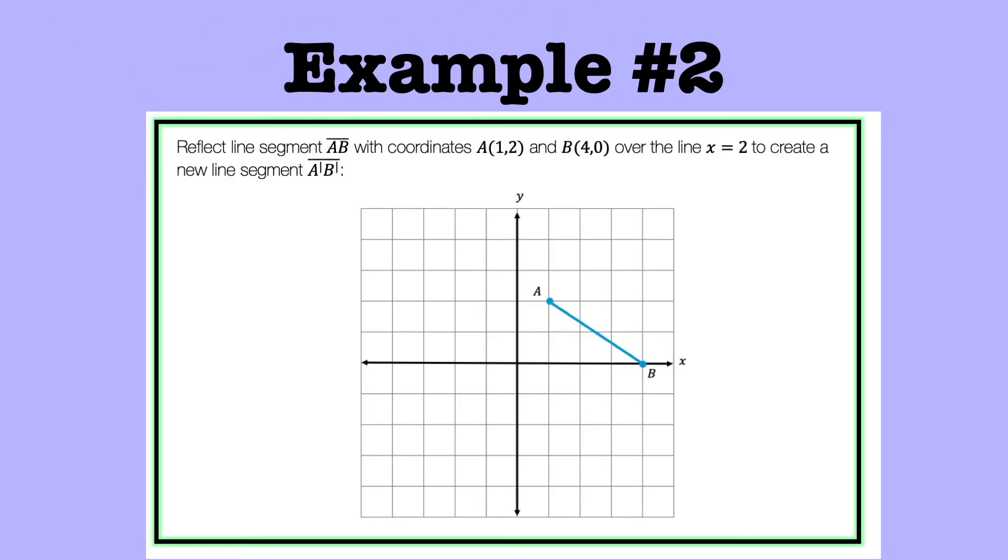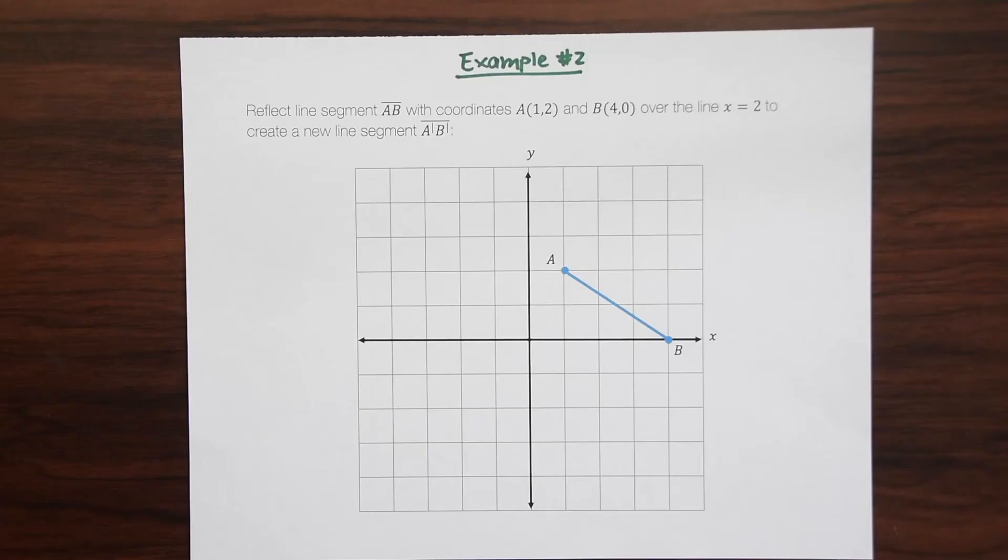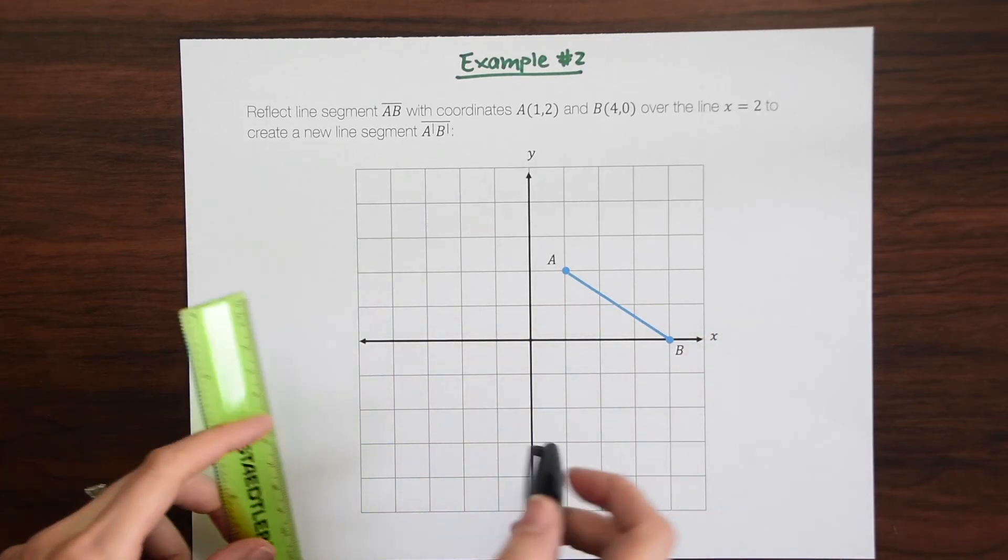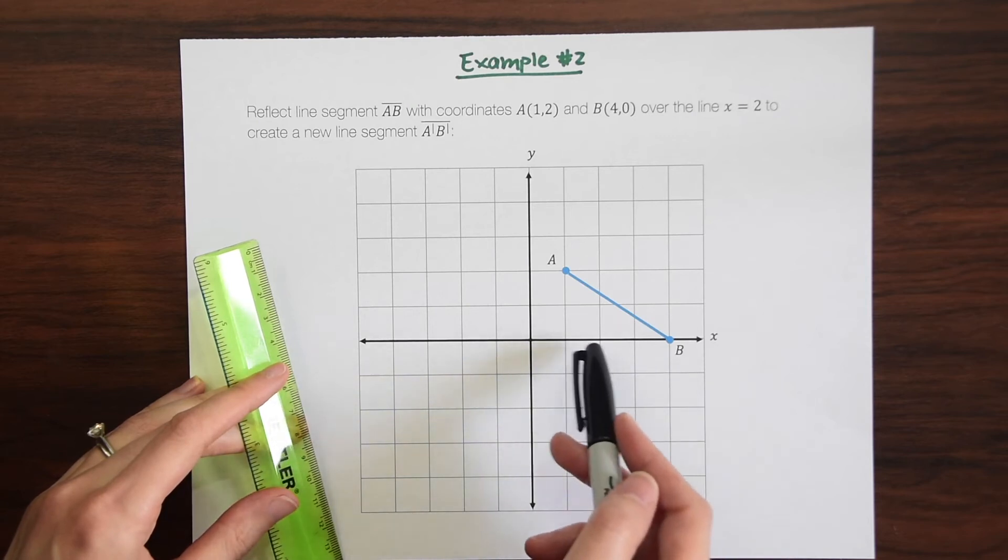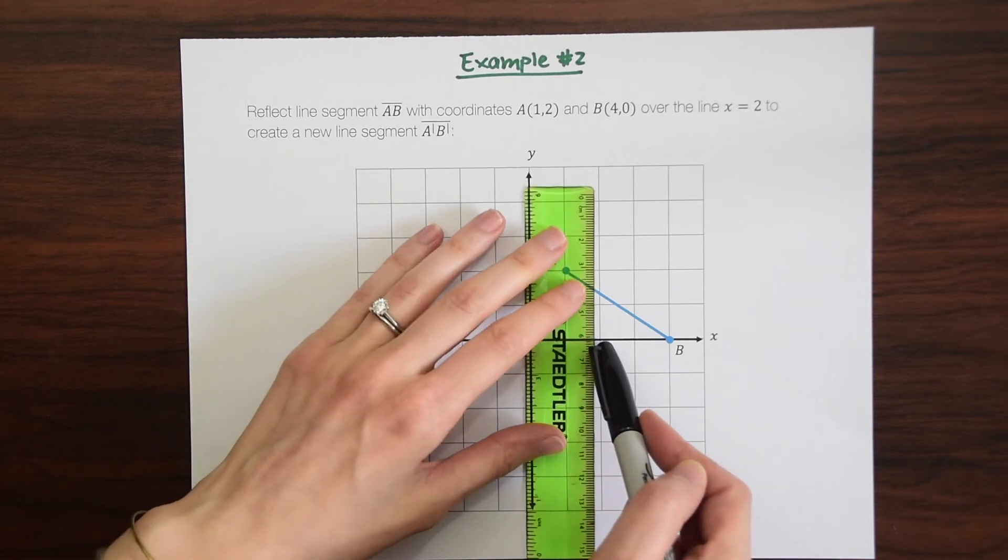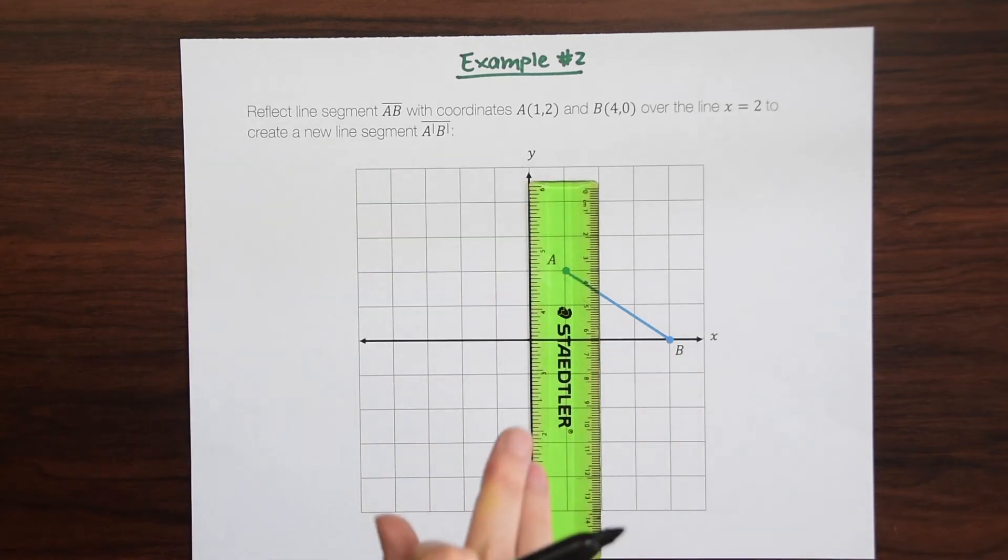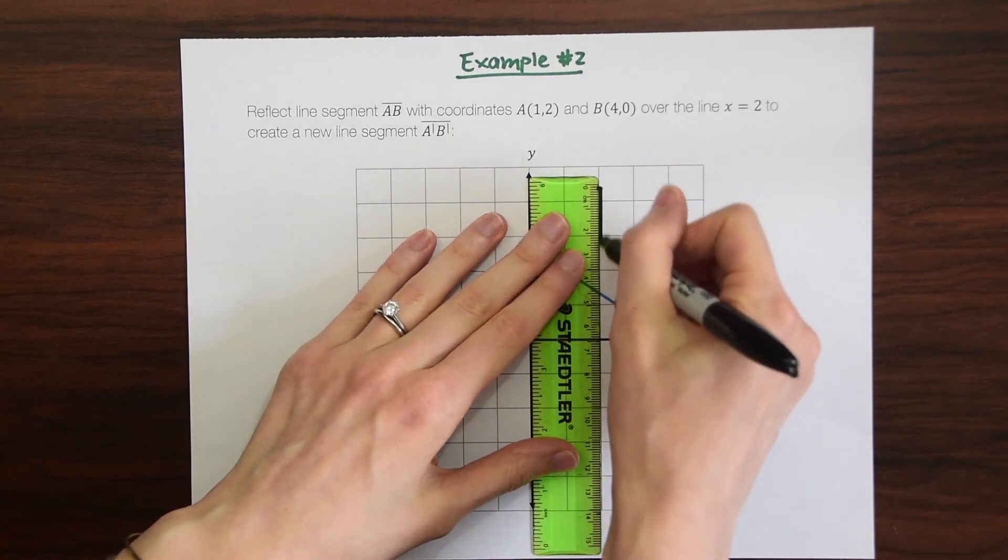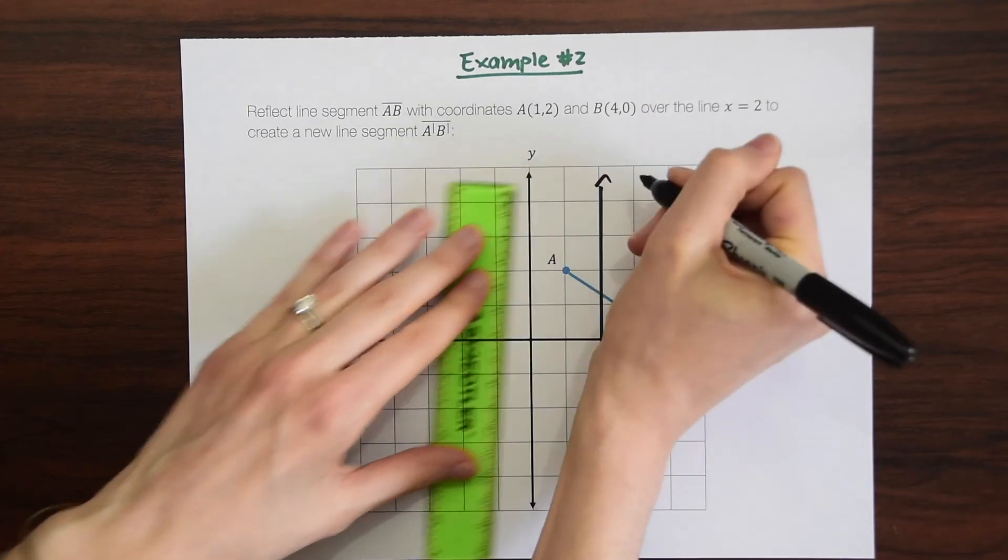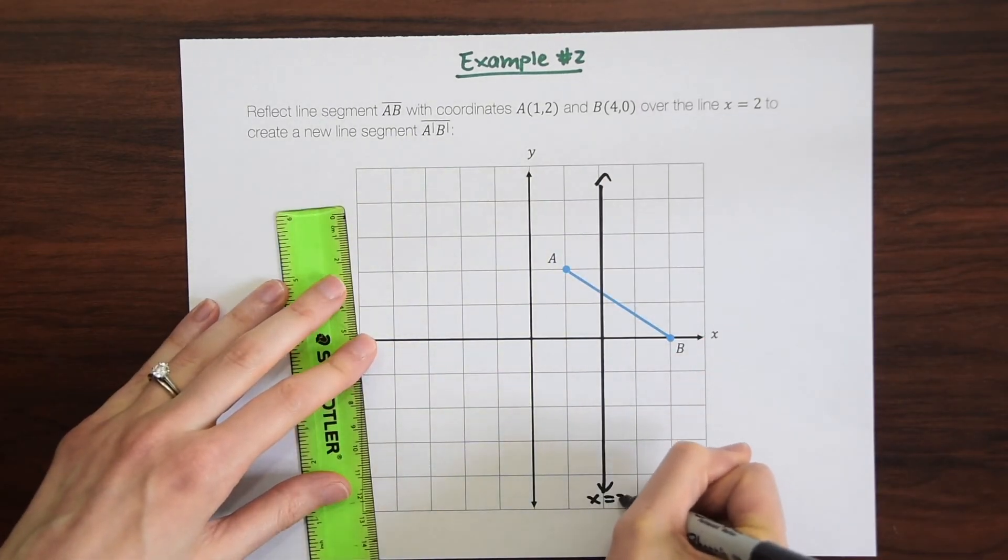Reflect line segment AB with coordinates A 1, 2, and B 4, 0 over the line x equals 2 to create a new line segment A prime, B prime. So this time we're dealing with a line segment instead of a triangle. So again, let's draw out our line x equals 2. So we go to where x is equal to 2, right? 1, 2. So that's right here. And then we're just going to draw a vertical line and label it x equals 2.